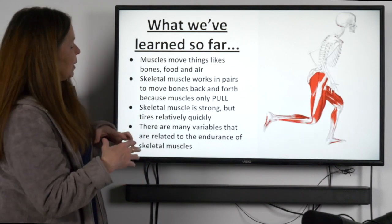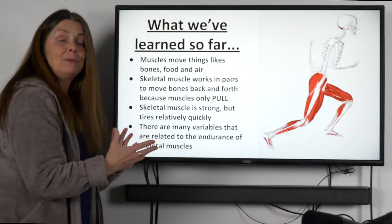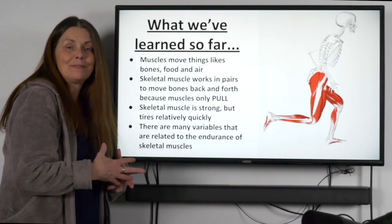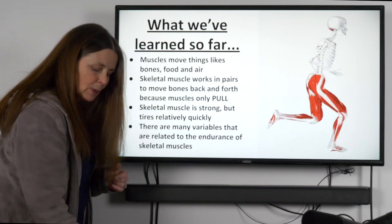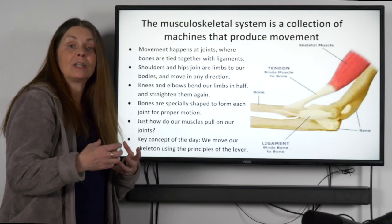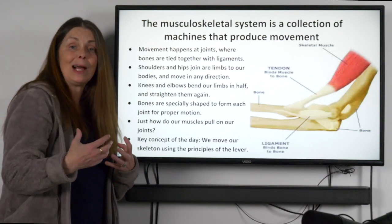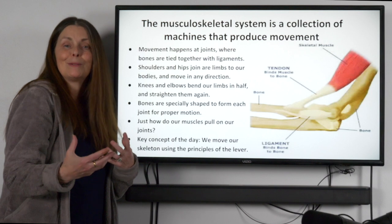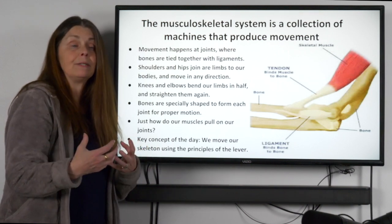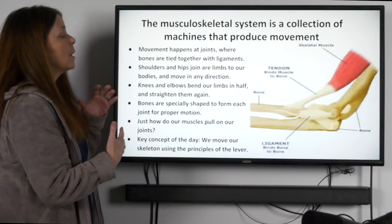When we looked at endurance, we found different variables that affected the endurance of some of us. So let's move forward one step and look a little more closely at how our muscles actually move our bones. Today we're going to look at how our skeleton and musculoskeletal system are like a bunch of machines put together to make movement in different directions. Here are a couple of facts you'll find helpful along the way.